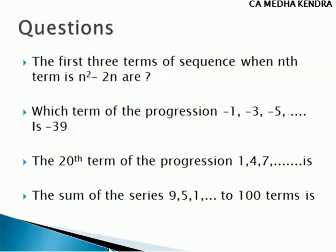Let us look at some examples. When questions are given in sequence and series, we need to first find out whether it is a sequence or series, then whether we need to find the Nth term or summation, and whether it is in arithmetic progression or geometric progression. The first question: find the first three terms of a sequence when the Nth term is N squared minus 2N. We need to substitute N with 1, 2, 3 to obtain the first three terms.